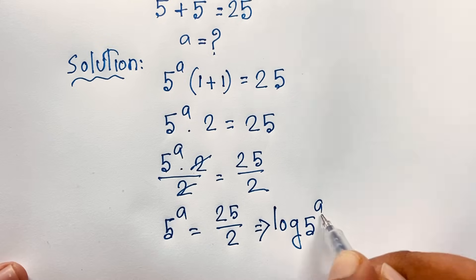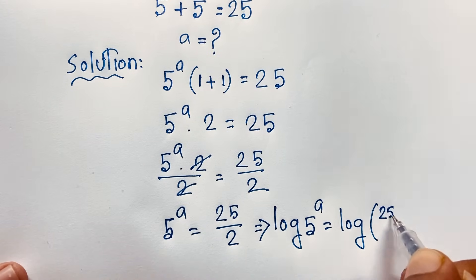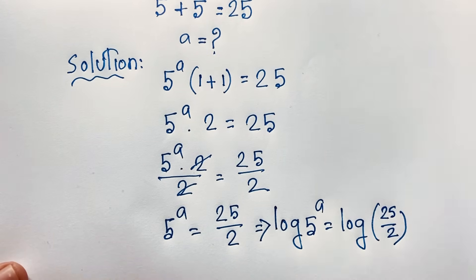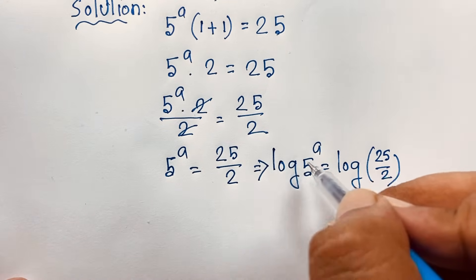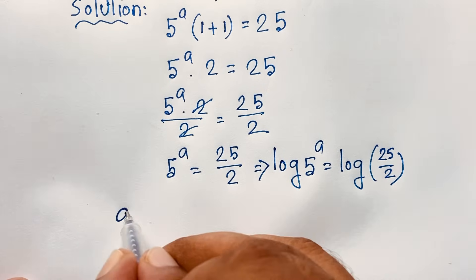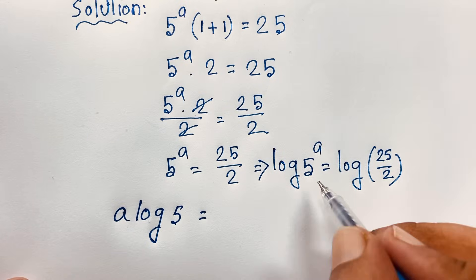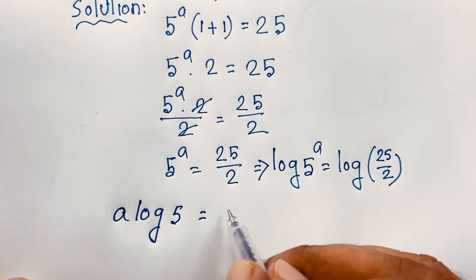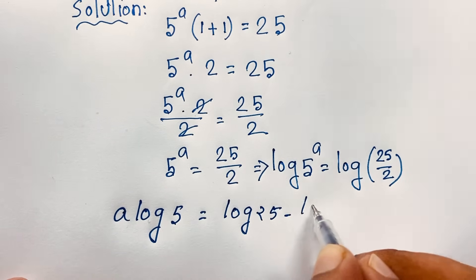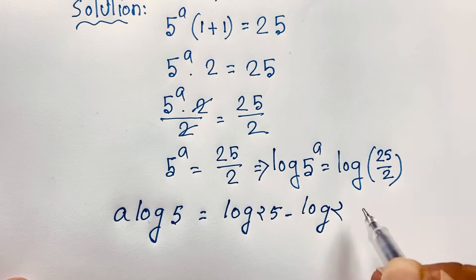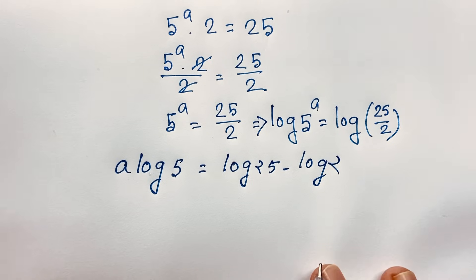Then I apply the natural log to both sides: log of 5 to the power a is equal to log of 25 over 2. Using the log quotient rule, log(a over b) equals log a minus log b, so this becomes log 25 minus log 2.